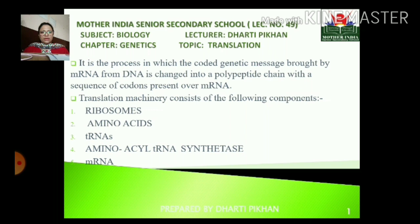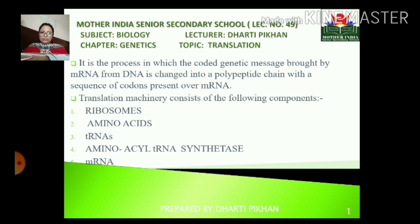Let's see what is used. First, ribosomes — it is a protein factory. Similarly, we have the amino acids which participate in it. Then we have the tRNAs, that is transfer RNAs. Then an enzyme — aminoacyl tRNA synthetase. Then we have the mRNA. So these five are the components of translation machinery.